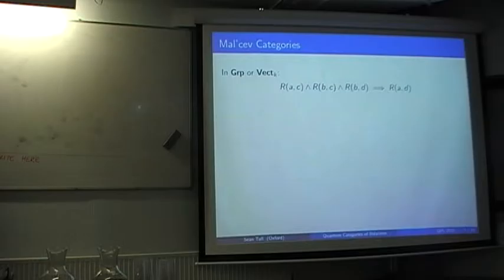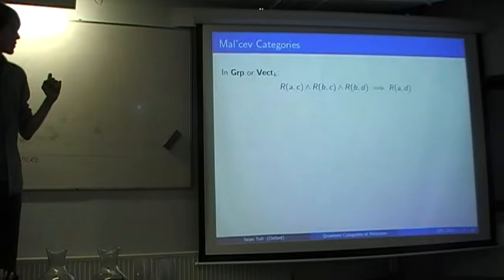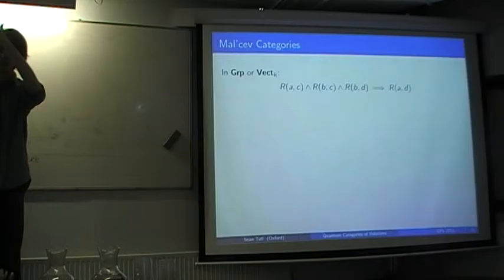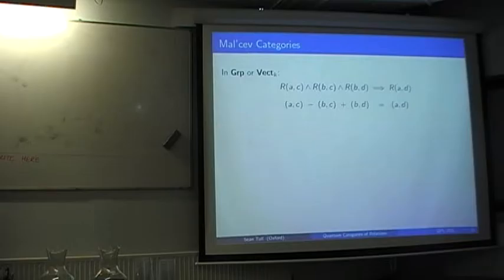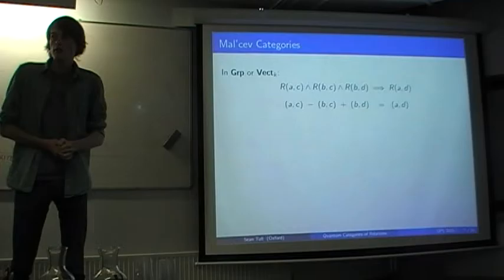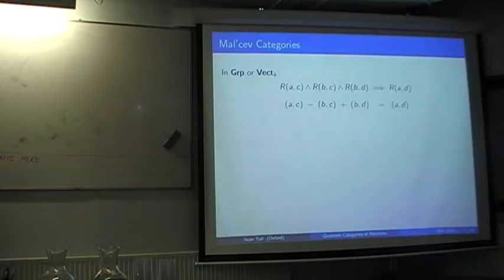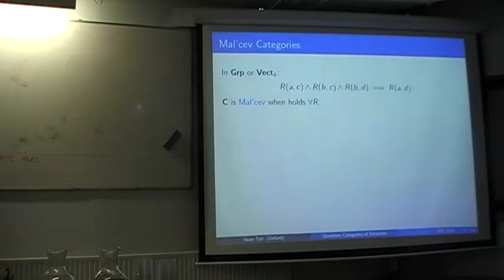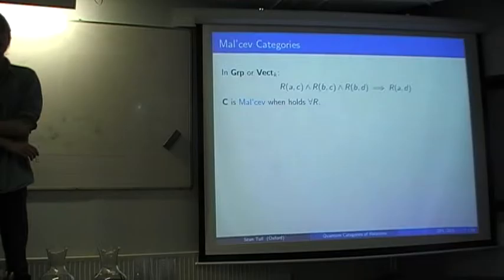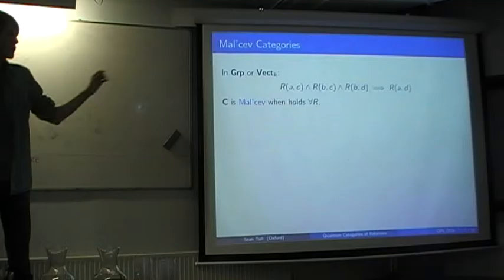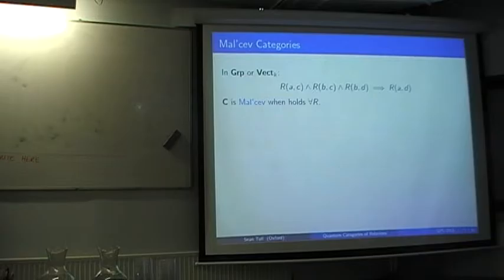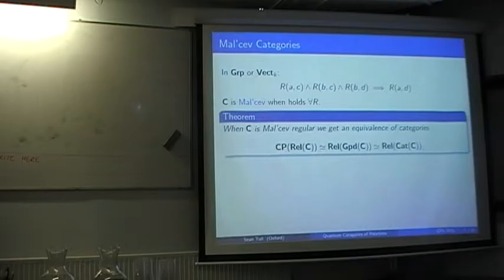The rest of the talk concerns a special class of categories — Malcev categories — where things become more natural. Let's think about groups or vector spaces. In these categories, any relation satisfies this law: if two points are related to some shared point, they're related to all the same shared points — a quite strong statement. For vector spaces, a relation R is now a subspace, so it's closed under linear combinations: if (A,C) and (B,C) and (B,D) are in R, you can derive the four combinations. You can do the same with groups. This extra law gives a lot of extra structure on relations. We call C a Malcev category when this holds. In these categories, internal groupoids and internal categories are exactly the same notion — and the completely positive relations now respect composition, which they didn't in the set case.